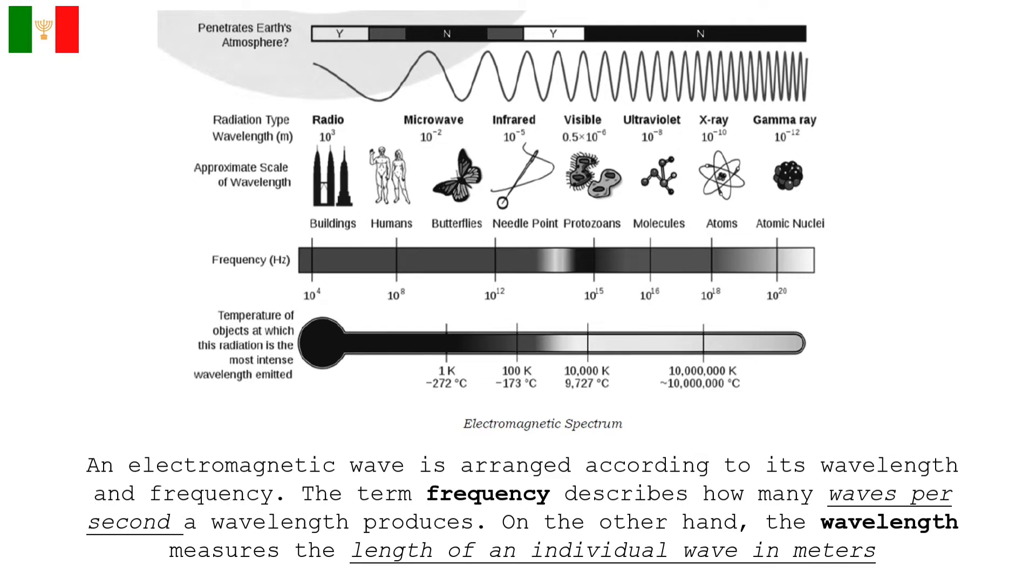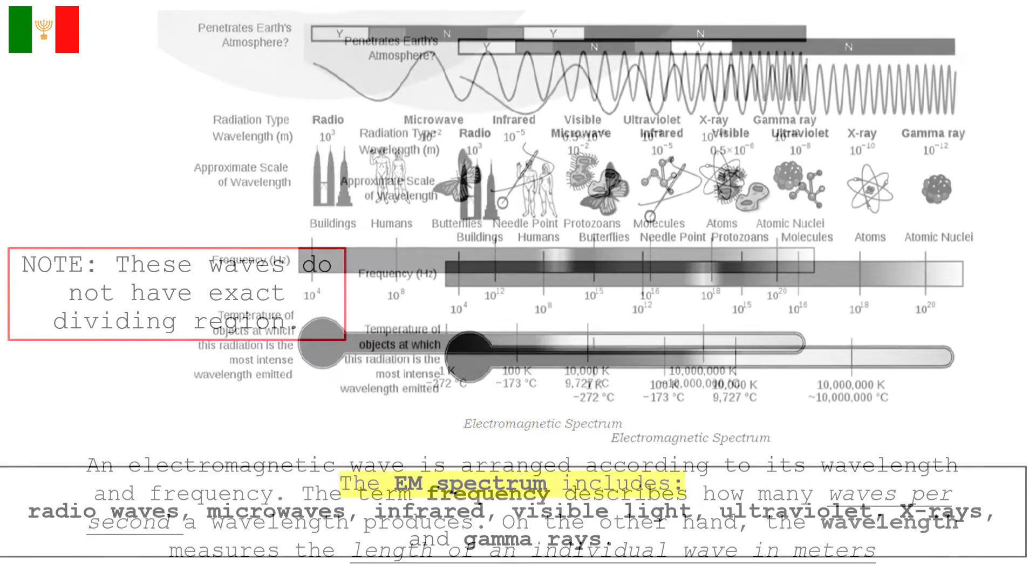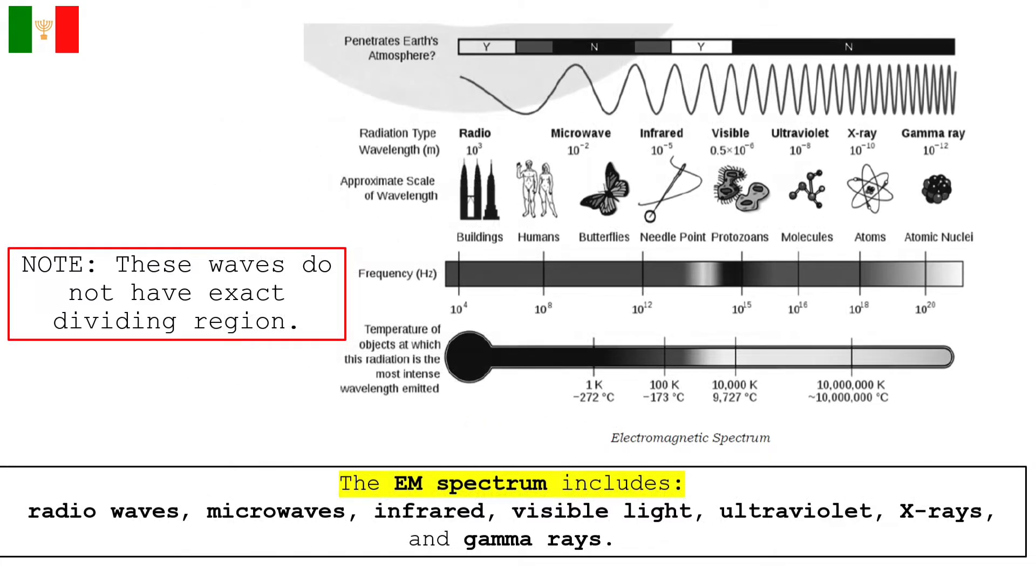An electromagnetic wave is arranged according to its wavelength and frequency. The term frequency describes how many waves per second a wavelength produces. On the other hand, the wavelength measures the length of an individual wave in meters. According to increasing frequency, the electromagnetic spectrum includes the following.